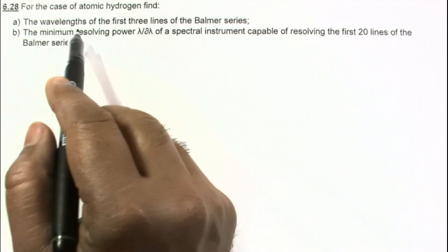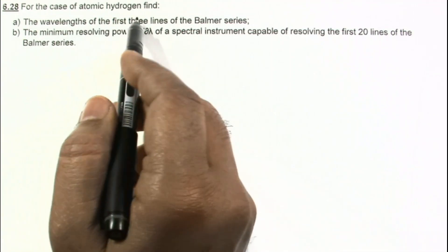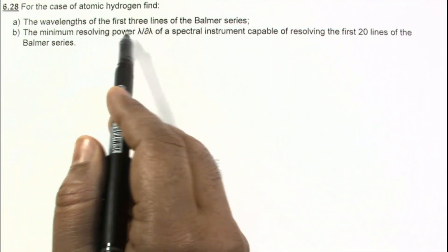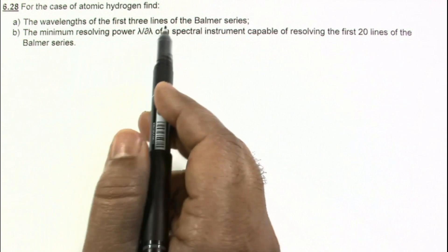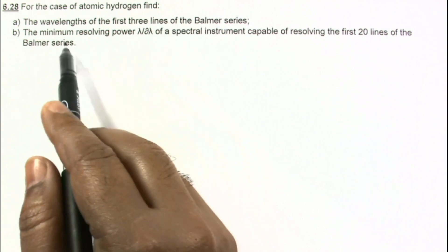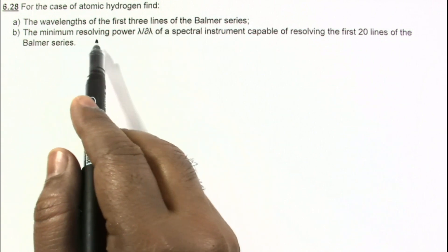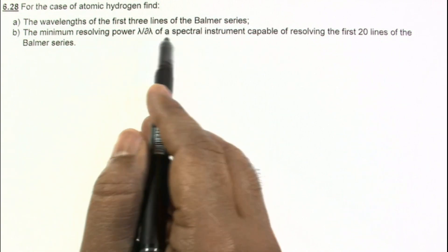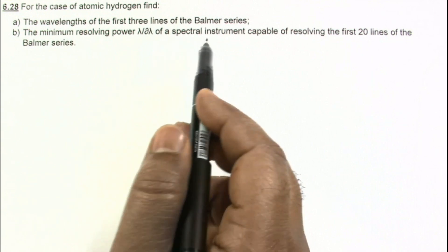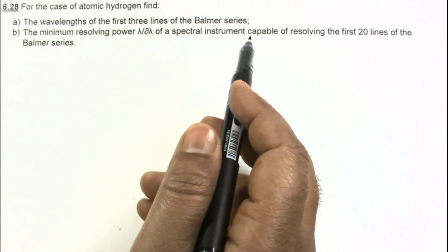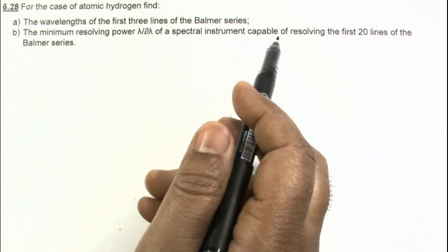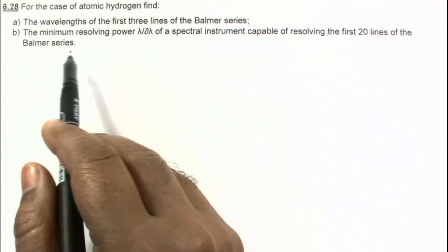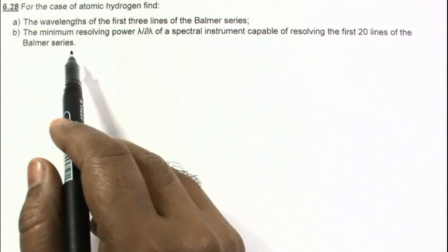In this problem, for the case of atomic hydrogen, we have to find the wavelength of the first three lines of the Balmer series, and the minimum resolving power λ/dλ of a spectral instrument capable of resolving the first 20 lines of the Balmer series.